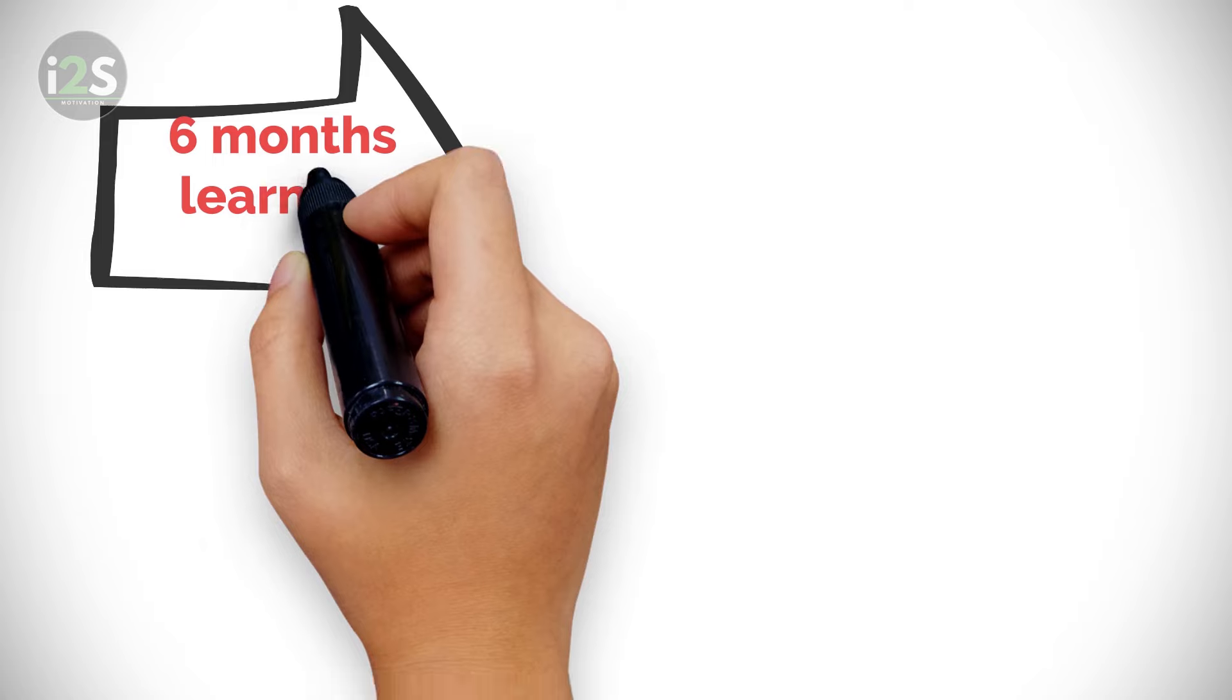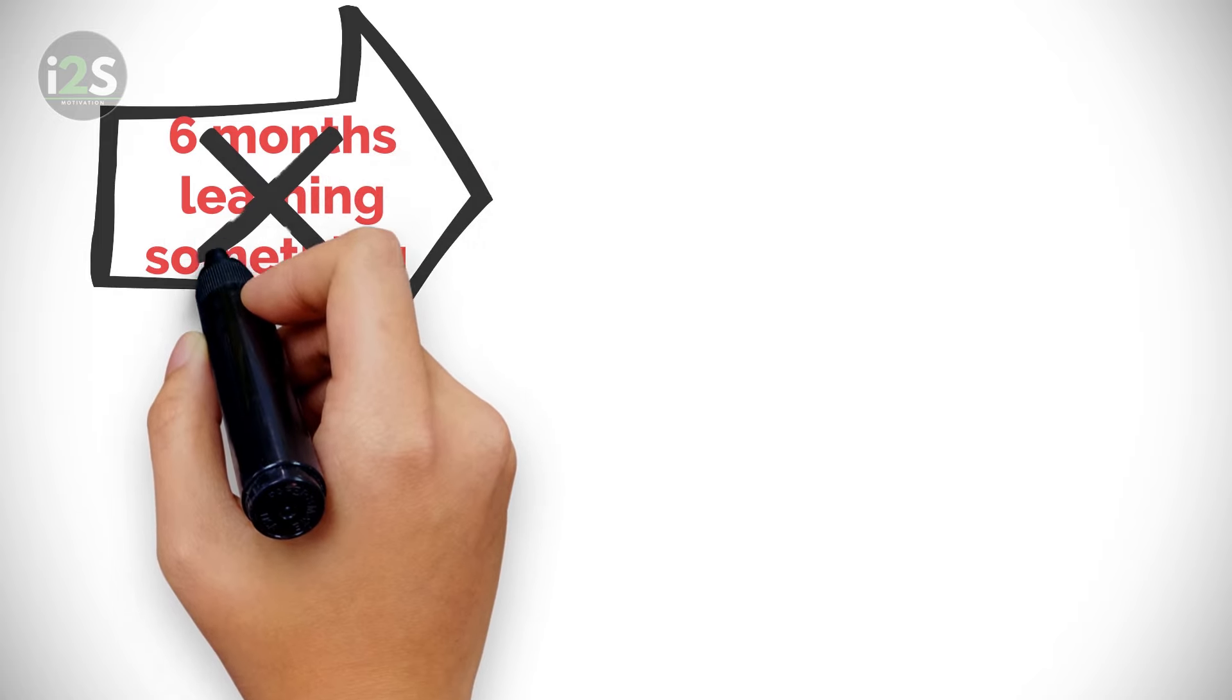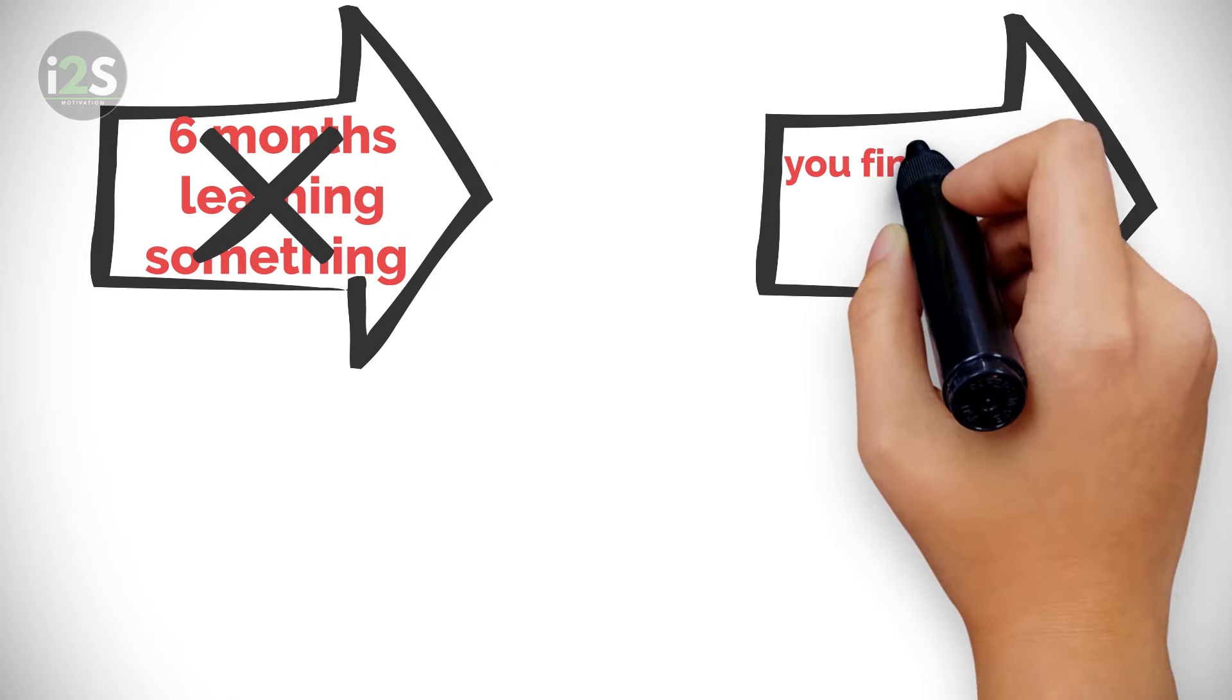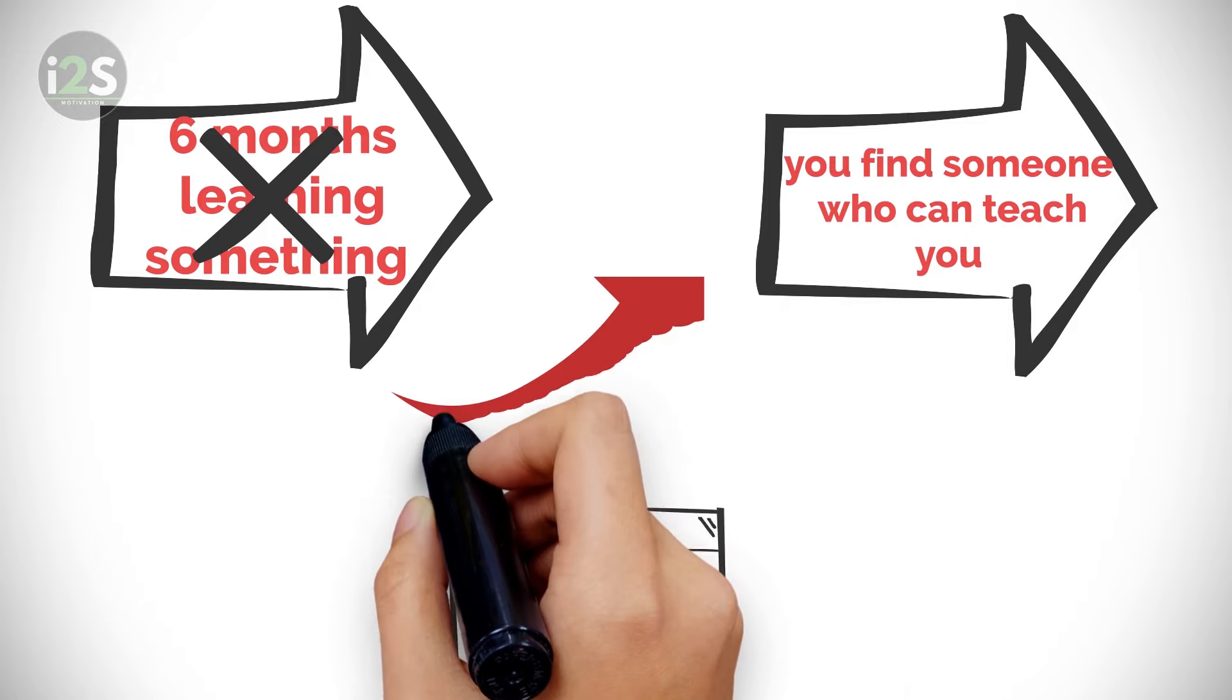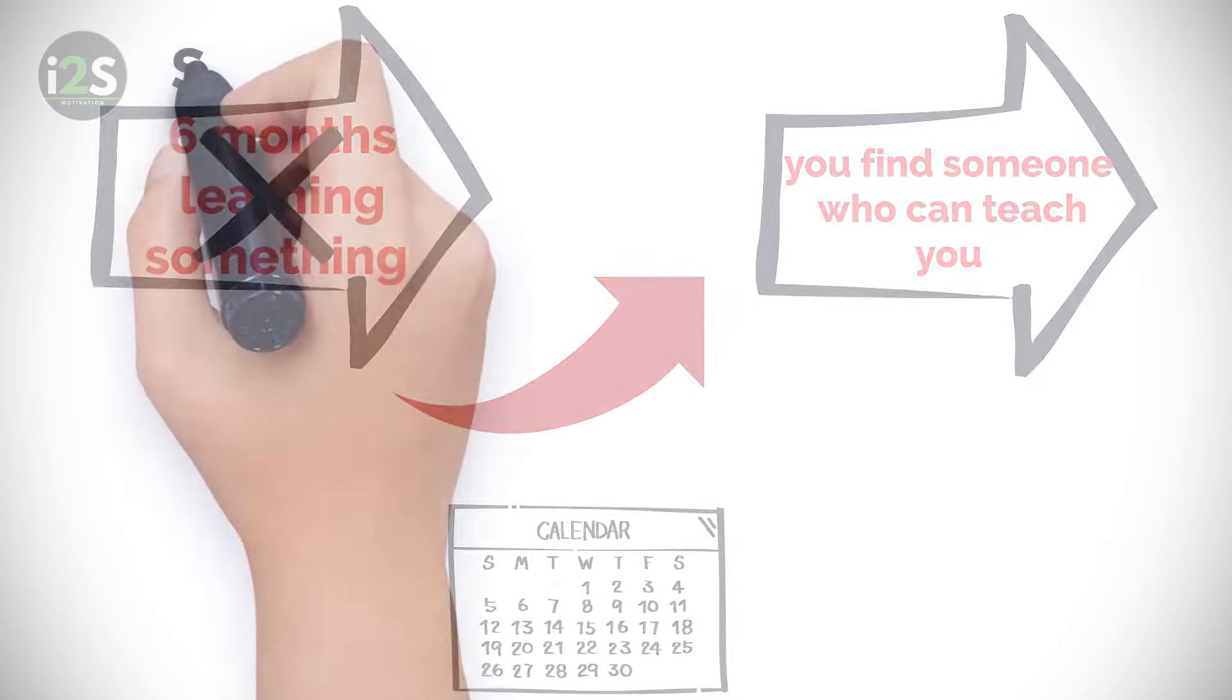The basic idea behind apprenticeship is this: Instead of spending six months learning something, let's say how to invest in real estate, you find someone who can teach you everything necessary in a few weeks and guide you through the process. Stage three: Social intelligence.